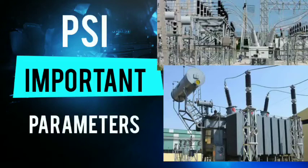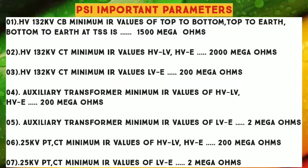Welcome to my channel Pawan Railway Tech. PSI Important Parameters. Number 1: HV 132 KV CV Minimum IR Values of Top to Bottom, Top to Earth, and Bottom to Earth at TSS's — 1500 Mega Ohms.